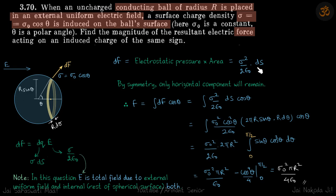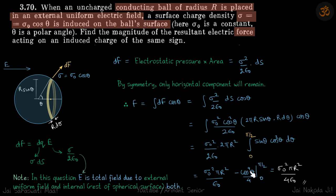So df = (sigma² / 2ε) · dS, and the vertical components cancel out, leaving only horizontal components: dF = df · cos theta. Substituting dS = 2πR sin theta · R dθ and sigma² = sigma-naught² cos² theta, the integral reduces to sin theta · cos³ theta dθ. Using the substitution cos theta = t, this becomes t³ dt, giving t⁴/4. Integrating from 0 to π/2 yields the final answer: F = sigma-naught² π R² / 4ε.